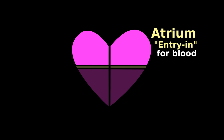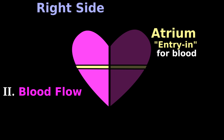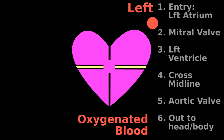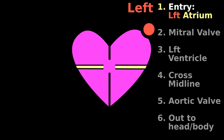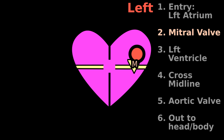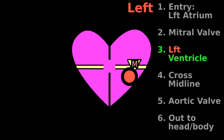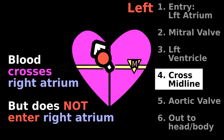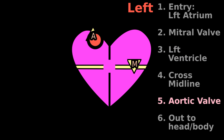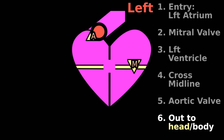The atrium is the entry point for blood, so let's follow the cardiac blood flow on the left and right sides of the heart. Oxygenated blood first enters into the left atrium, then goes through the mitral valve into the left ventricle, crosses the midline to exit the aortic valve, and finally travels far to deliver oxygen to the head and the rest of the body.